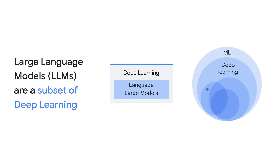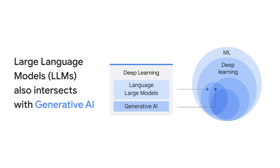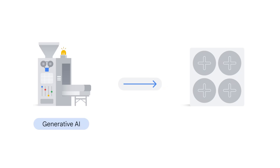Large Language Models, or LLMs, are a subset of deep learning. To find out more about deep learning, see our Introduction to Generative AI course video. LLMs and Generative AI intersect, and they are both a part of deep learning. Another area of AI you may be hearing a lot about is Generative AI. This is a type of artificial intelligence that can produce new content, including text, images, audio, and synthetic data.